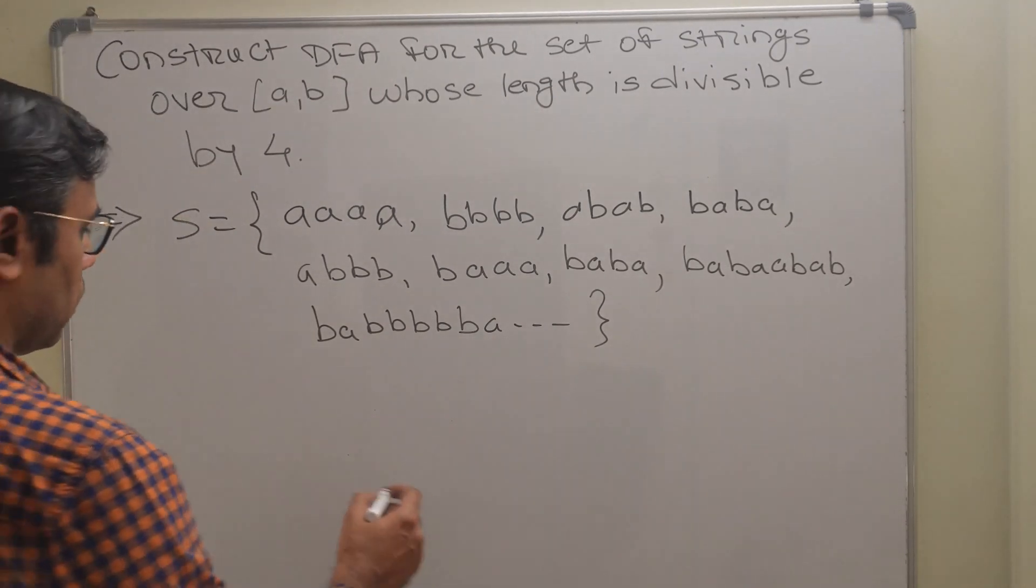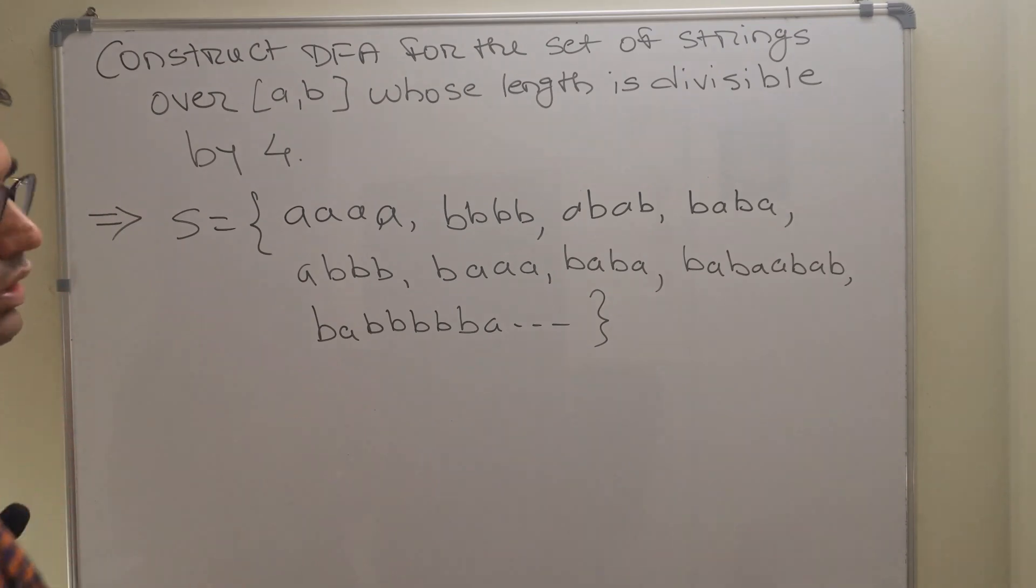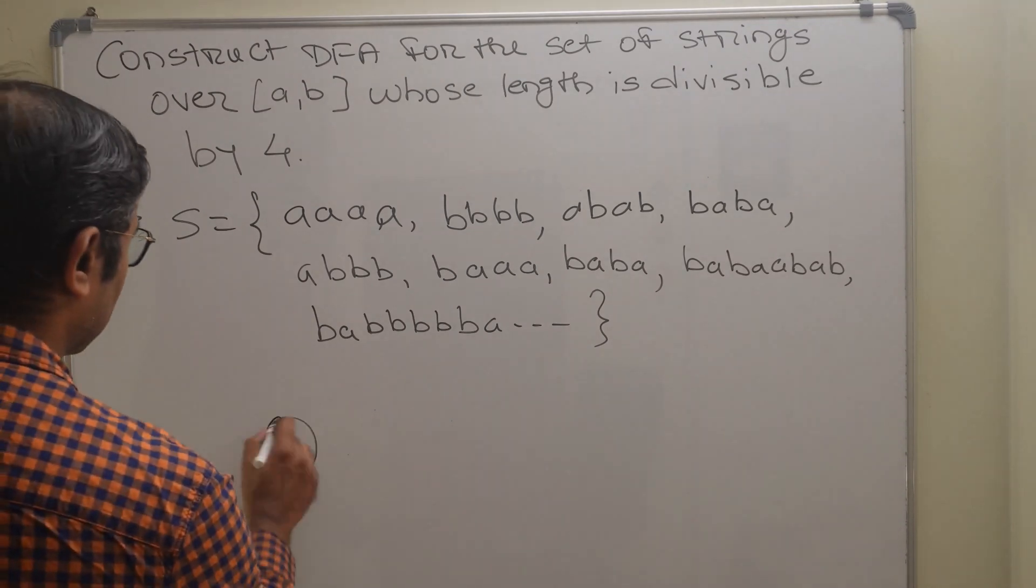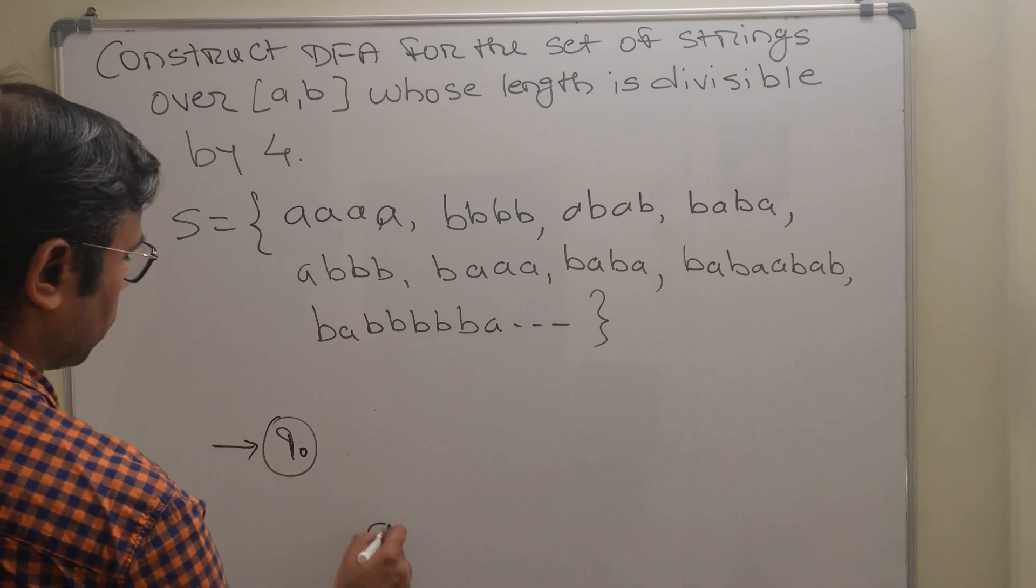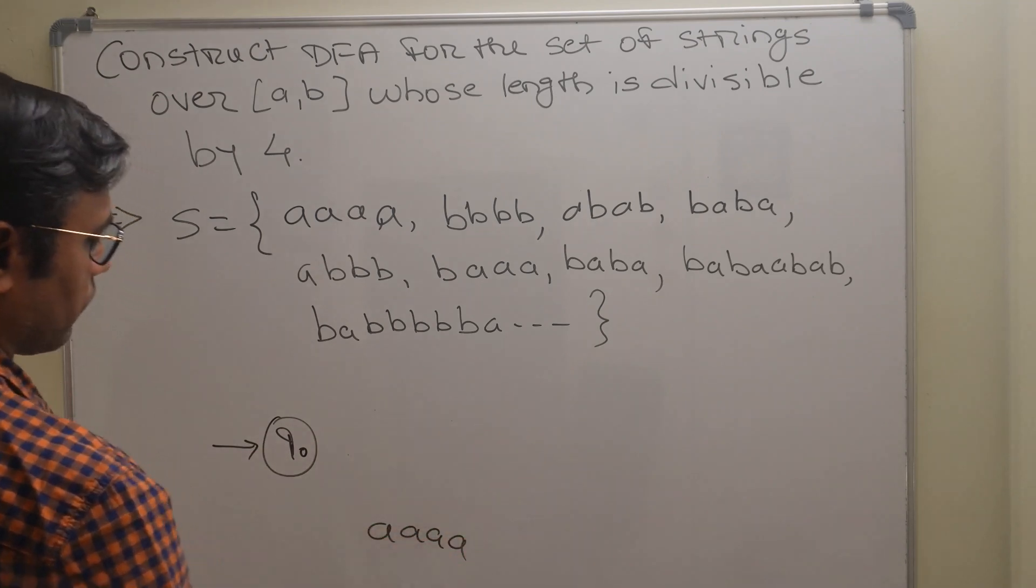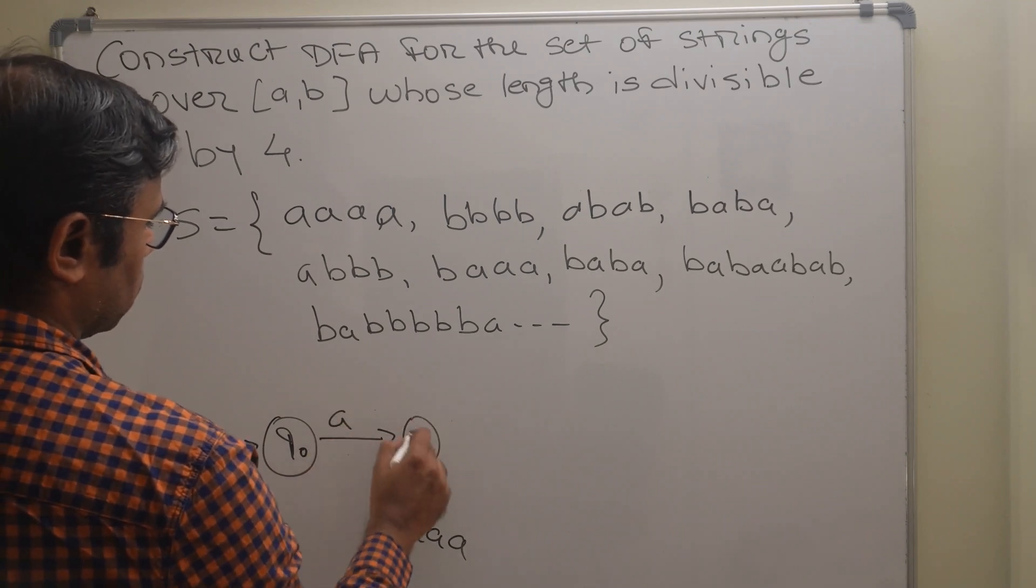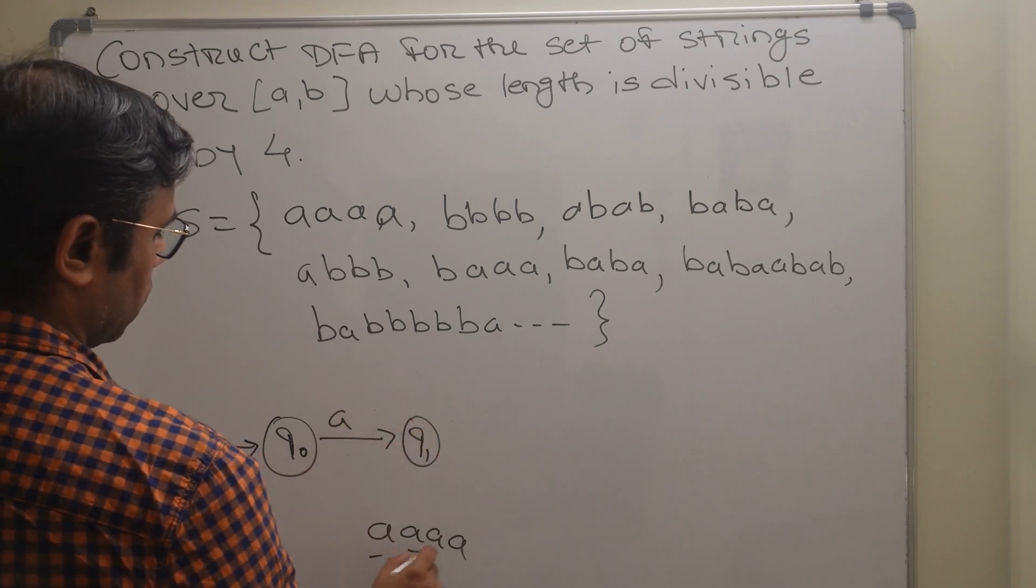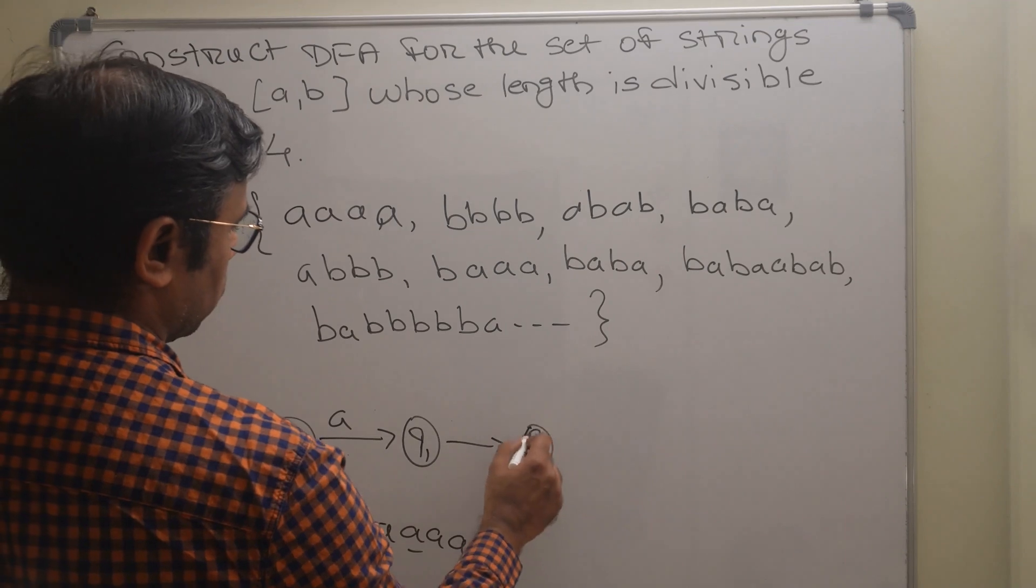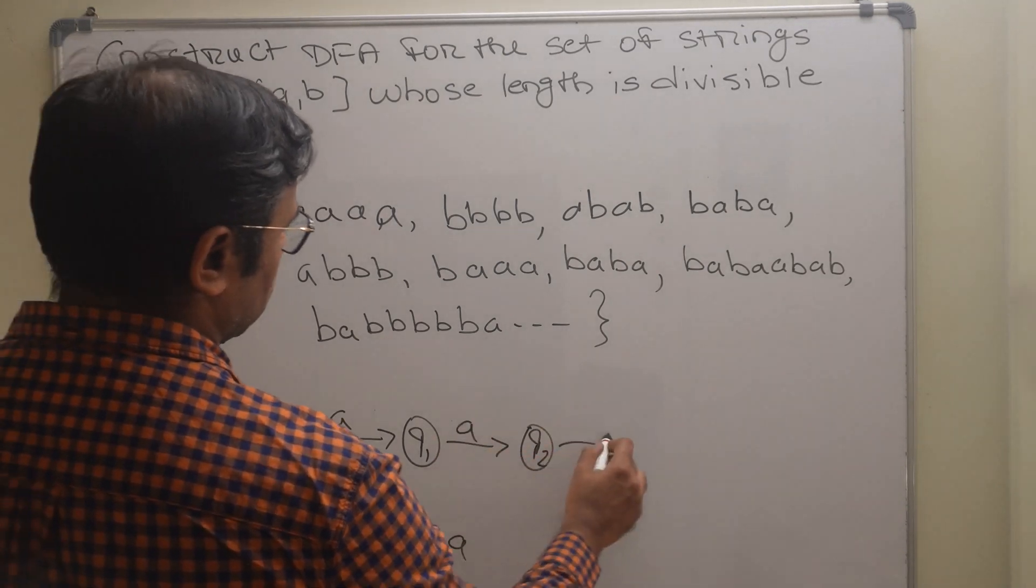So first of all let us start with the DFA. There is initial state called q0, then I will take first possibility for a. For a, first a, then there is second a, so there is q2, then there is q3.